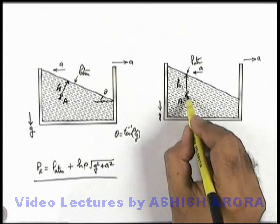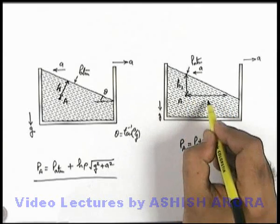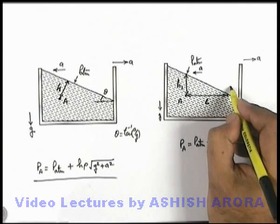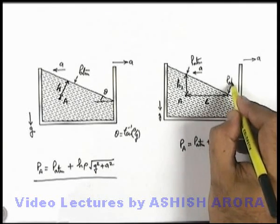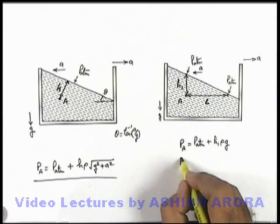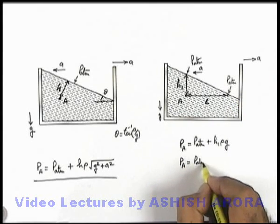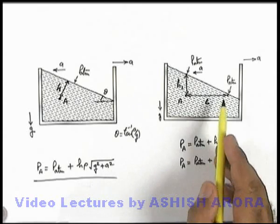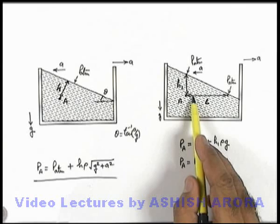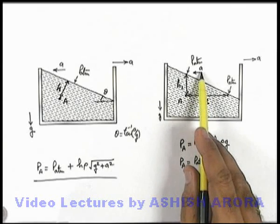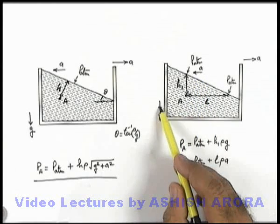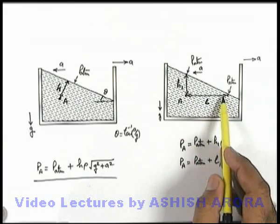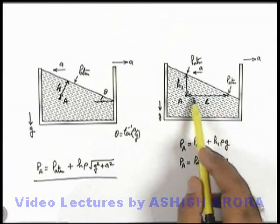Similarly, if point A is taken at a horizontal distance l from the free surface, we can say that at the free surface pressure is P_atmospheric. So the pressure at point A can be given as P_atmospheric + l·ρ·ay, because along horizontal length l the pressure varies only due to the effective acceleration ay. Due to gravity there is no pressure variation along the horizontal length l.